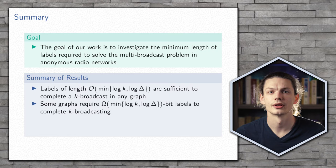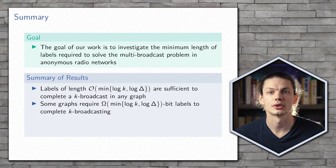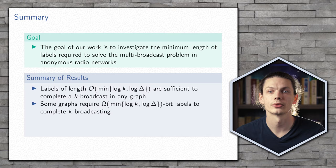Our work can roughly be divided into two separate categories. First, dealing with arbitrary graphs — we were able to show that O(log k) length labels are sufficient to complete k-broadcast in any graph. As well, O(log δ) labels are sufficient to complete the k-broadcast in any graph, where delta is the maximum degree of the graph.